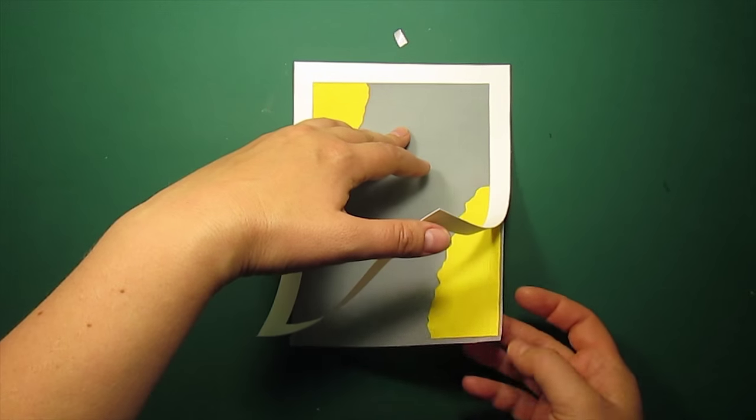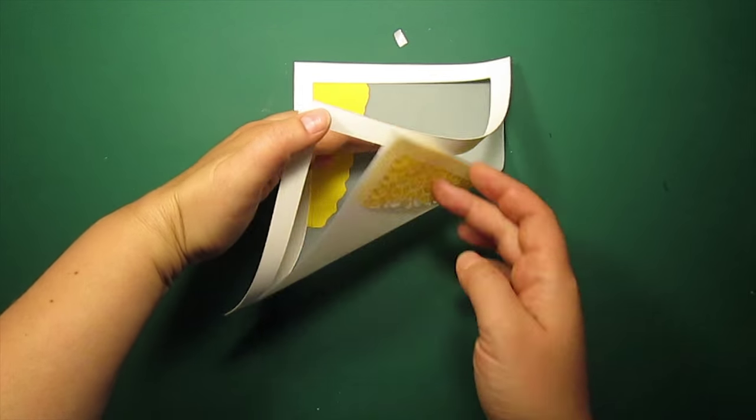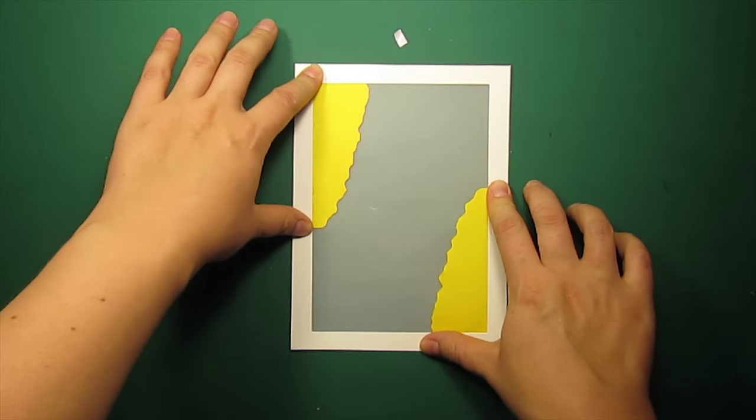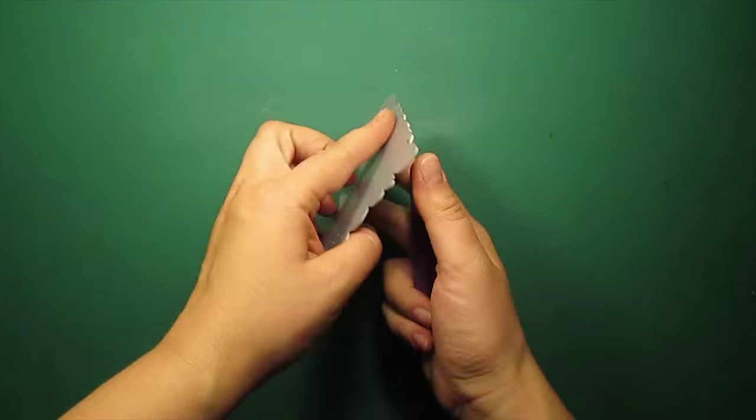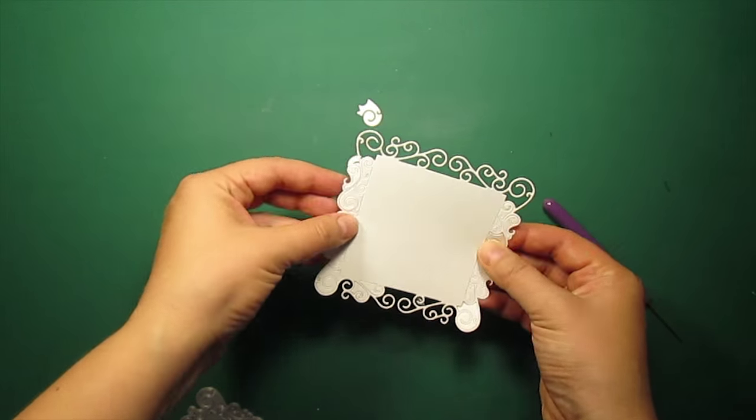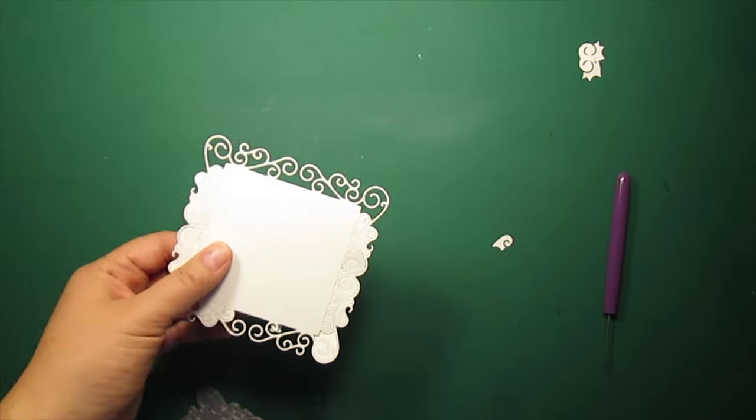Now what I did is I have masked off the die cut corners and temporarily adhered the frame. I have also die cut a Claudette frame by Poppy Stamps out of an ivory cardstock.